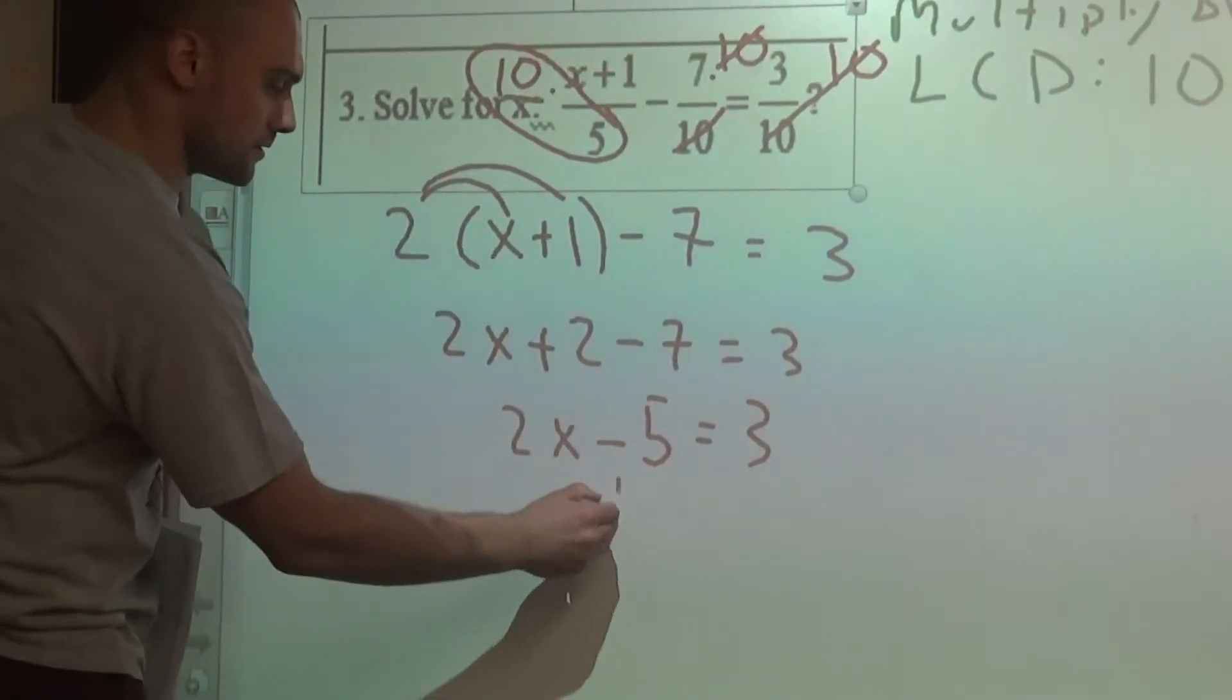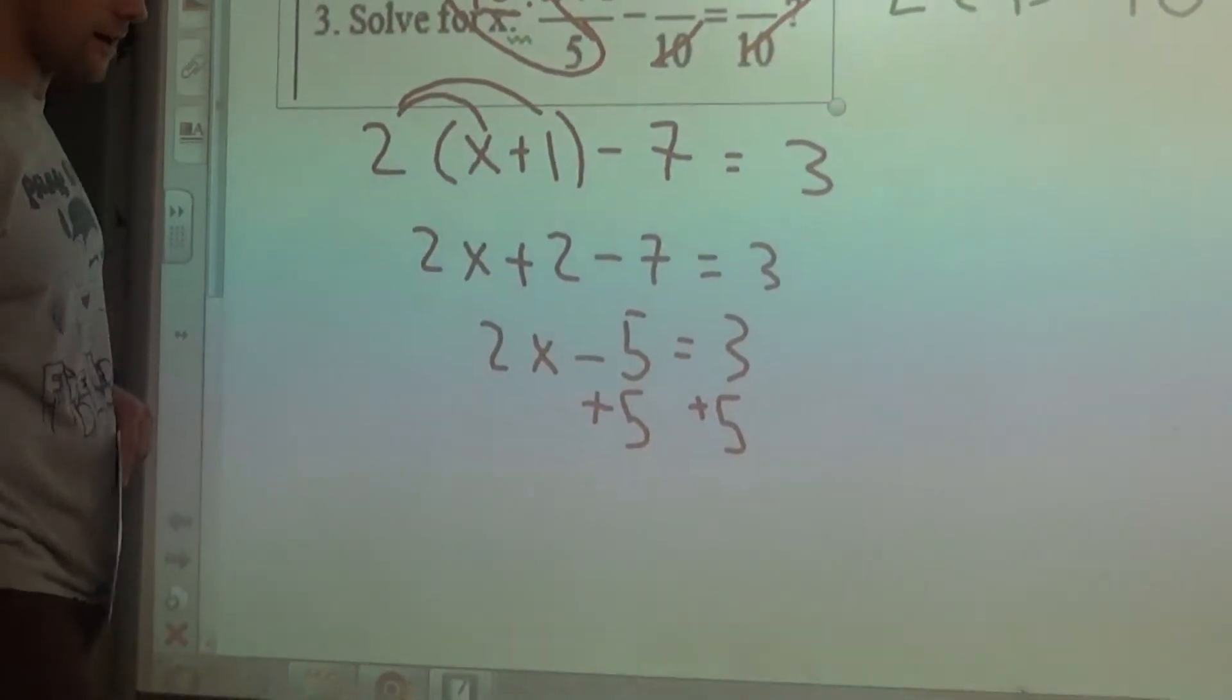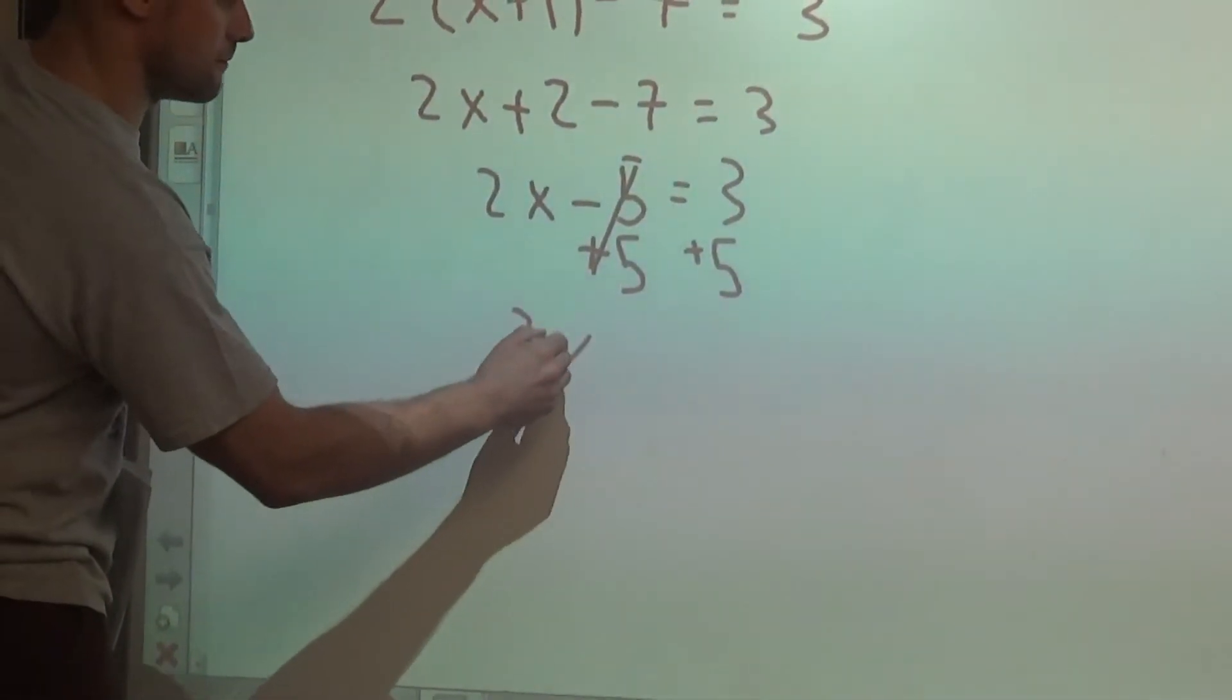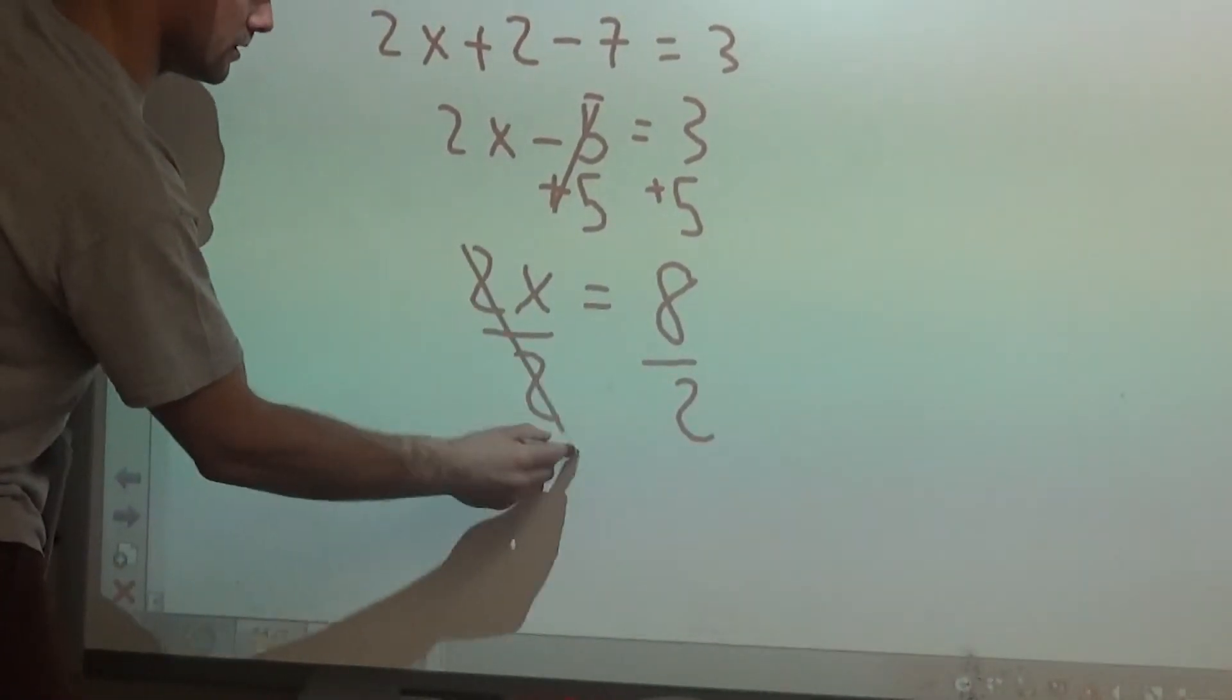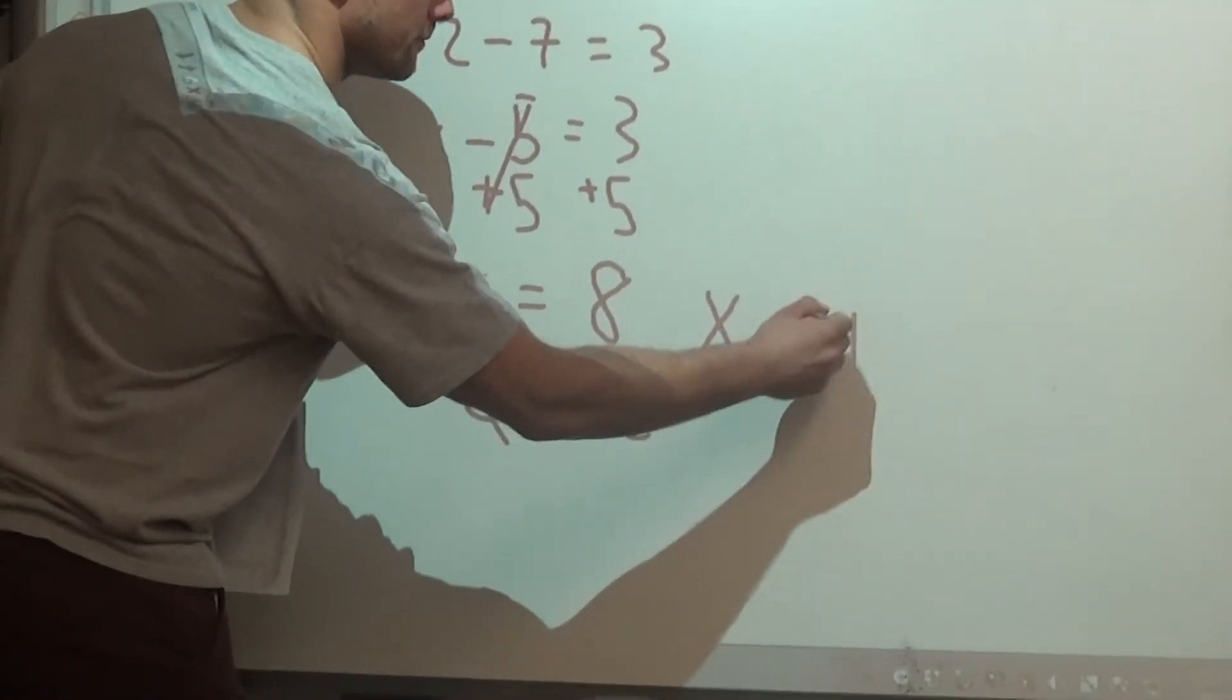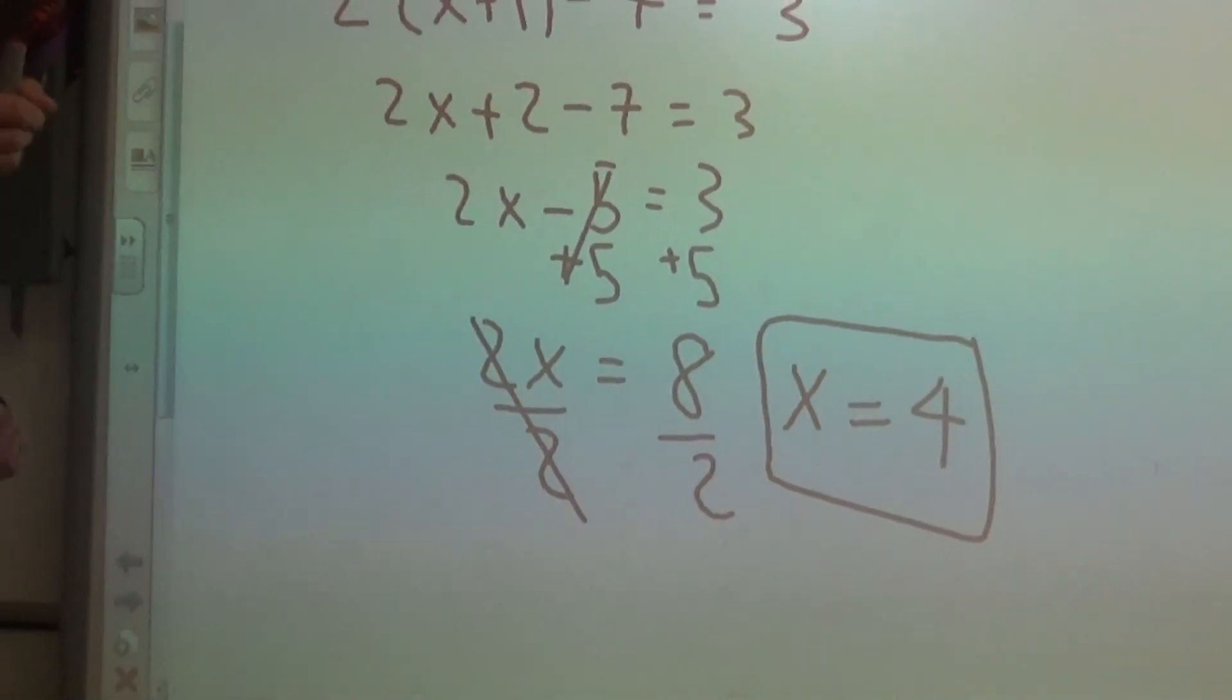We can add 5. And the final step, divide by 2. There we go. Excuse my arm. x equals 4. Nice job.